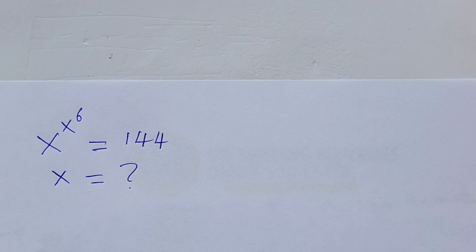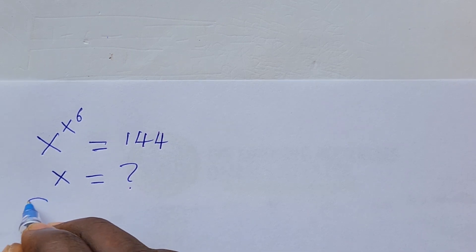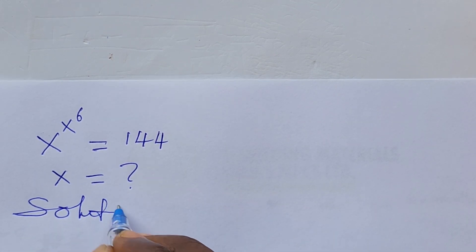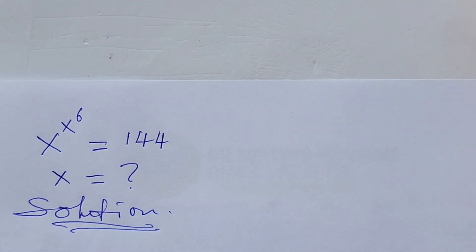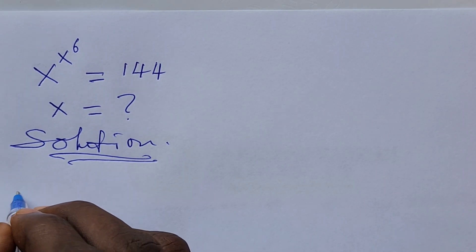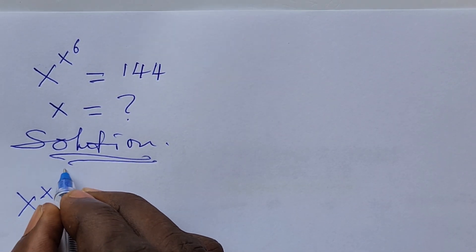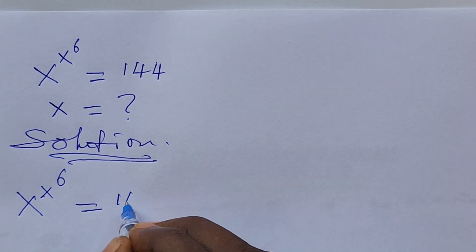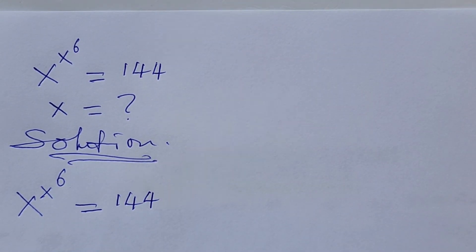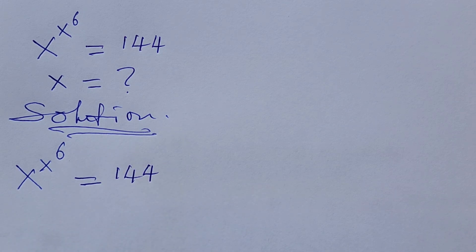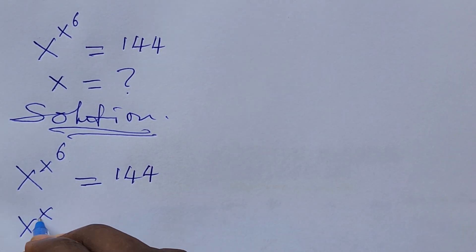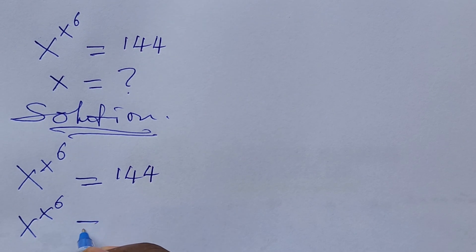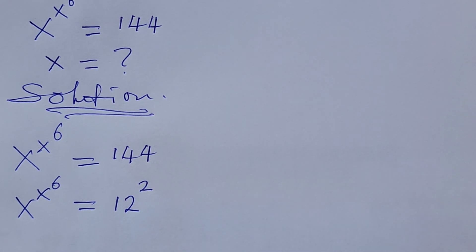Now let's go into this challenge without much waste of time. We put down our question: x to the power of x to the power of 1/6, equal to 144. We can rewrite the right-hand side because 144 is a perfect square, so this gives us x to the power of x to the power of 1/6, equal to 12 to the power of 2.